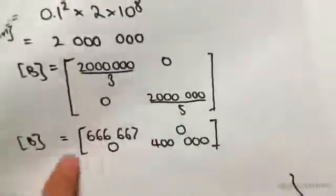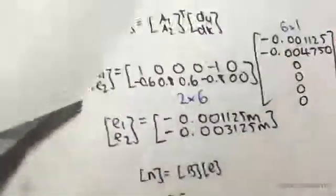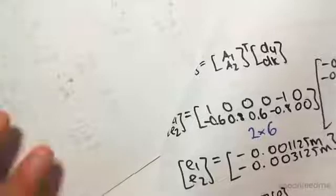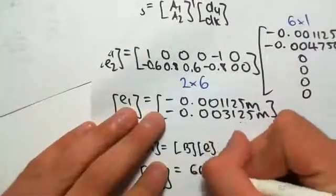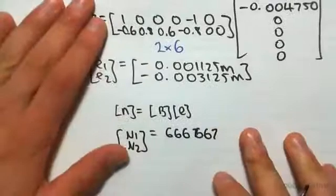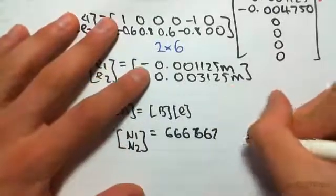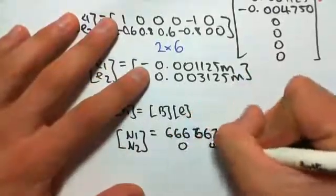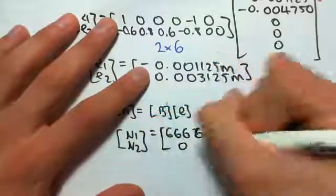So we saw that in the previous video. We saw that b was this thing here. So that's b. So it is 666667, 0, 0, 400,000.